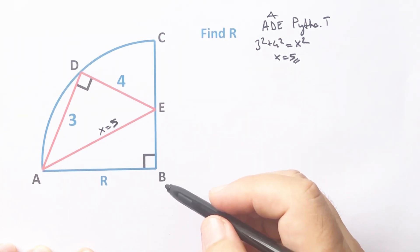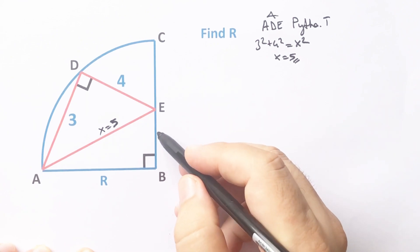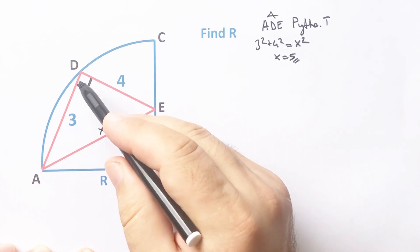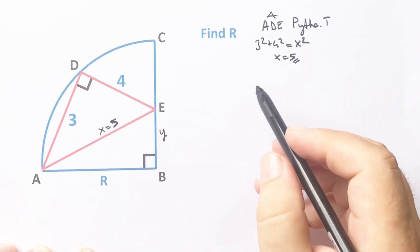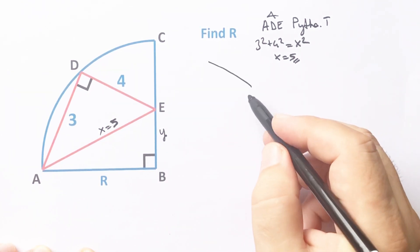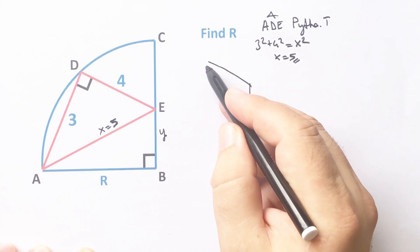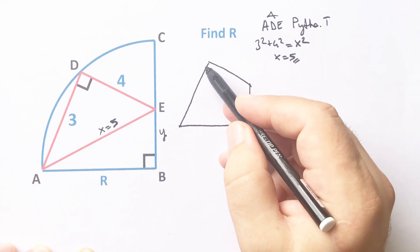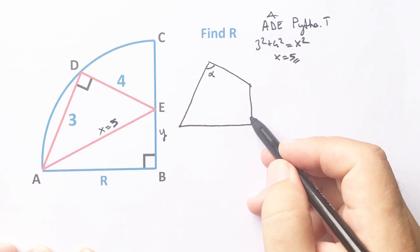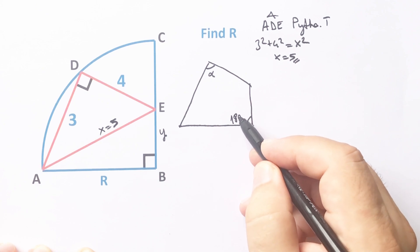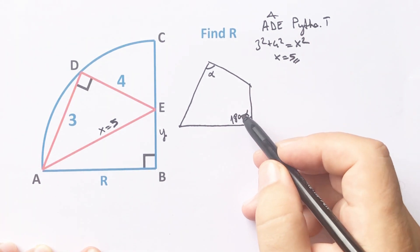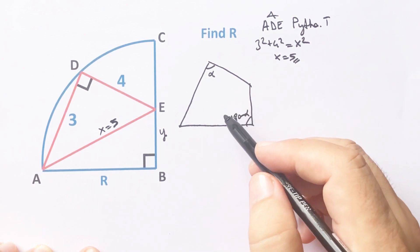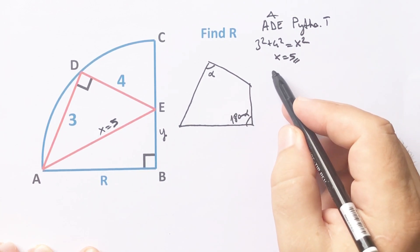And then let's call here y unit. Notice that the sum of these two opposite angles equals 180 degrees. So this quadrilateral must be exactly a cyclic quadrilateral, because the sum of opposite angles equals 180 degrees.